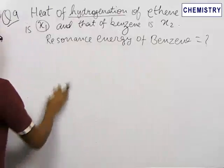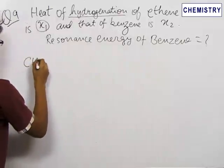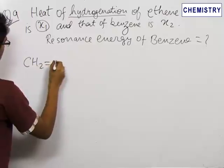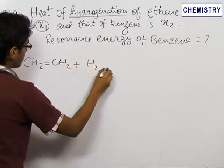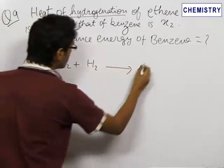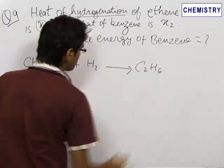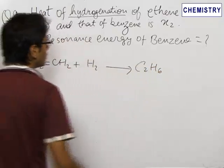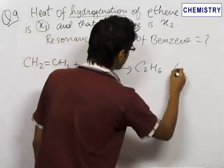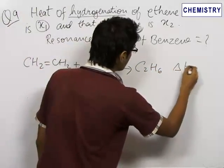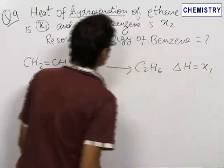So, let us write the equation for ethene: CH₂=CH₂ plus one mole of hydrogen gives C₂H₆. The heat of hydrogenation of this reaction, that is the delta H, is equal to x1.